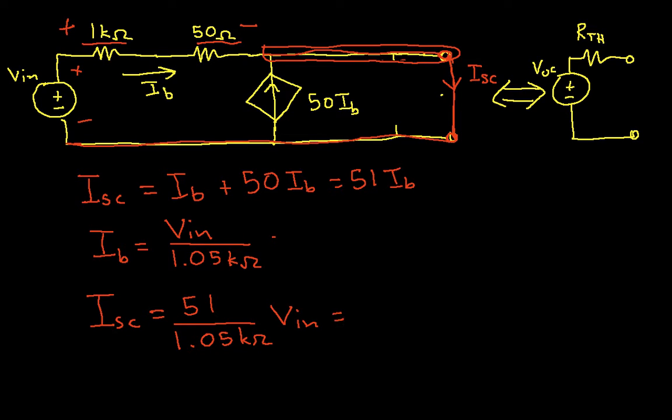And I can work this out to get that the short circuit current is 0.0486 times VIN. Well, we now have everything we need to compute the Thevenin equivalent resistance.